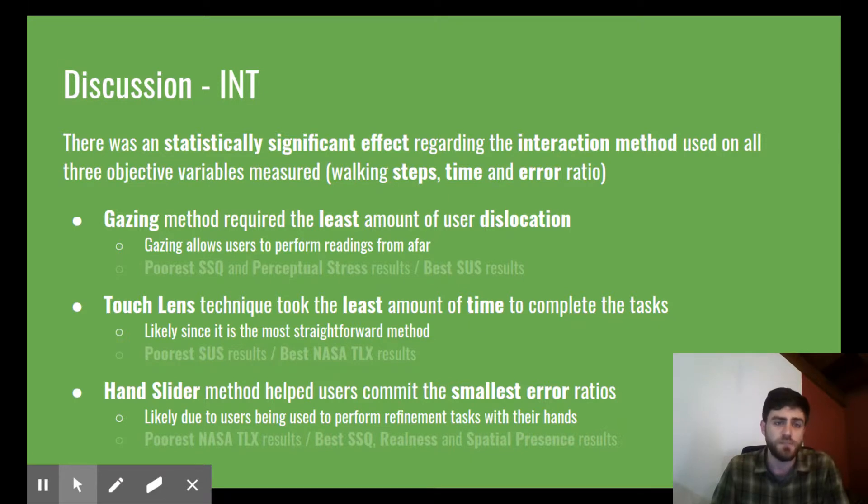The touch lens method took less time, likely since it used a very straightforward touching metaphor which was easy to reproduce. The hand slider likely had the smallest error ratio since the subjects were used to perform refinement tasks with their hands, as humans usually do.